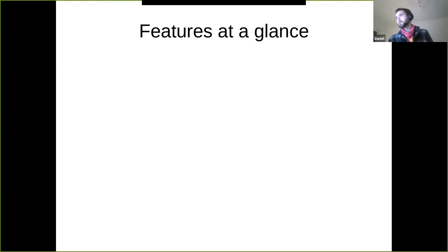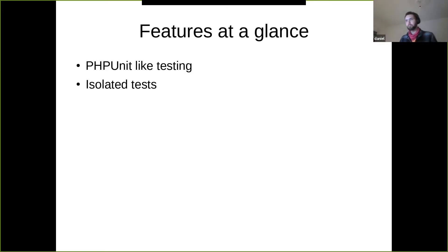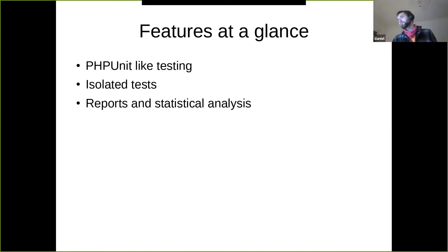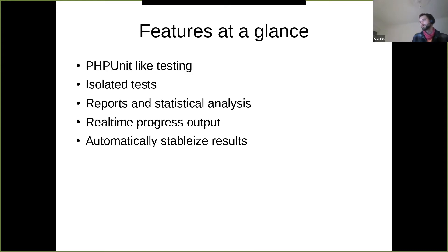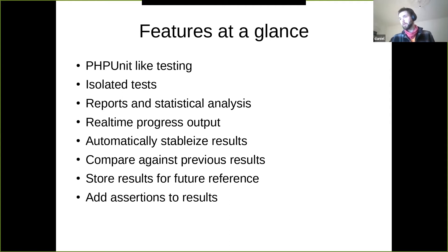Features at a glance: you've got PHPUnit-style testing. Benchmarks are run in isolation — for each iteration a new process is spawned and the measurement takes place in that process, which means PHP Bench won't contaminate your code or affect what dependencies you can have in the code you're benchmarking. You've got reports and statistical analysis, nice progress output, a feature to ensure results are more stable, and you can store and compare results, detect regressions. Now in 1.0, you can also add assertions and potentially put it in a CI pipeline.